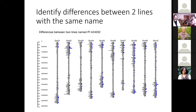In contrast, two accessions both labeled PI 44032 show differences across all 20 chromosomes, not isolated to any one region. Contacting the collaborator confirmed the line was mislabeled — the differences confirmed that these two accessions, despite sharing the same name, are not the same, confirming the error.